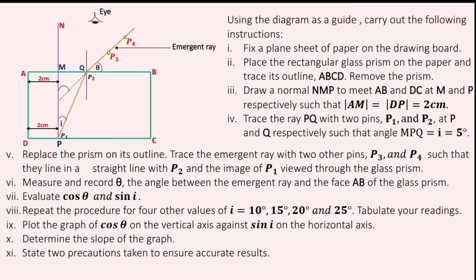Fix a plain sheet of paper on the drawing board. Place the rectangular glass prism on the paper and trace its outline ABCD. Remove the prism. Draw a normal NMP to meet AB and DC at M and P respectively, such that AM is equal to DB and is equal to 2 cm. Trace the ray PQ with two pins P1 and P2 at P and Q respectively, such that angle MBQ equals i, and is equal to 5 degrees.